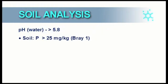Phosphorus analyzed with Bray 1 must be more than 25 mg per kg.